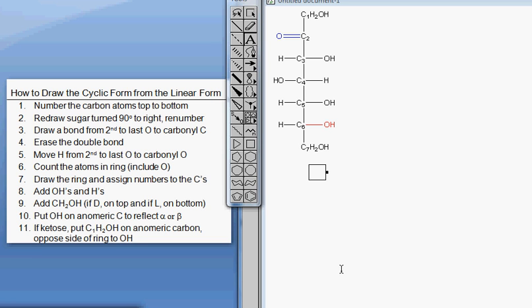One last example should cover all the different types of sugars you might see. We've done an aldohexose, an aldopentose, a ketohexose, and this time the carbons are already numbered. This is a heptose,